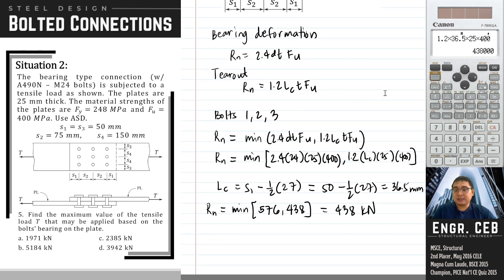By the way, we have a technique or a way in order to determine which among the two will govern already. So if you're going to equate the 2.4 DT FU and 1.2 LCT FU, the tear-out formula or the tear-out nominal strength will not govern if the expression is greater than 2.4 DT FU. If we're going to simplify this one, take note that T FU will be cancelled and LCT will be left on the left part if we divide both sides of the inequality by 1.2. So we will obtain LCT greater than 2D. Tear-out will be greater than the capacity in bearing deformation if LCT is greater than 2D.